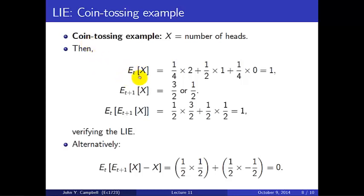So in the coin tossing example, e_t x is one-quarter times two plus a half times one plus a quarter times zero, that's one. The expectation at t plus 1 after you've tossed one coin of x is either three-halves or one-half. The expectation at the beginning of that e_t+1 of x is the probability of three-halves, which is a half. So one-half times three-halves plus one-half times one-half, that's one. So we're going to get one when we calculate this and one when we calculate this. They're the same.